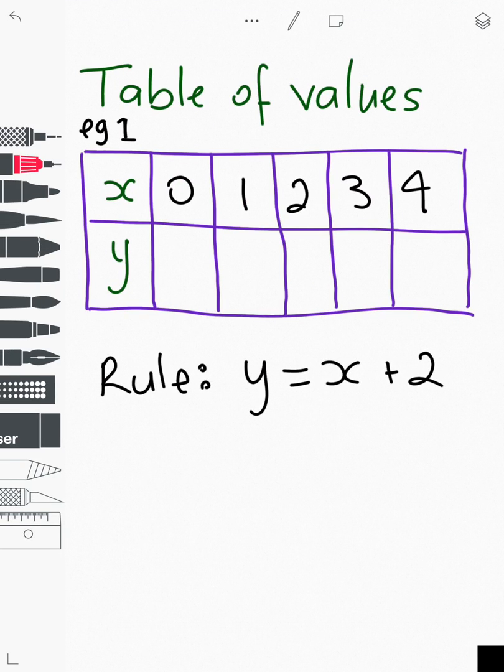Let's have a look at this table of values. The x values are already given in this question, 0 to 4, but there's a rule underneath that says y equals x plus 2. So what we have to do is go column by column and fill in the value for y. If we look at the first column, we can see x is 0.